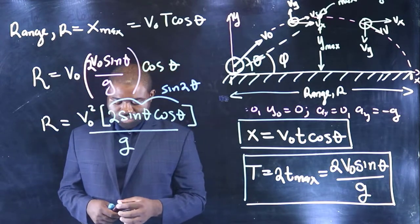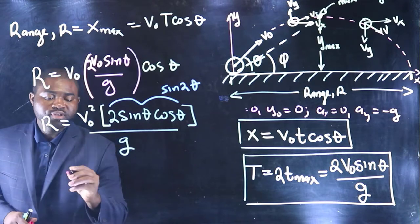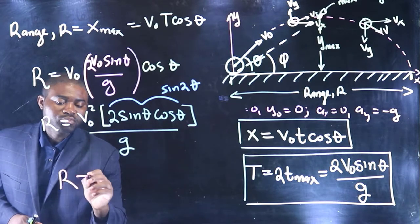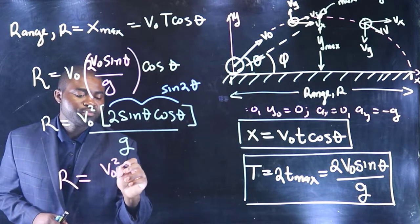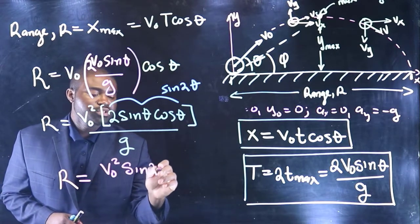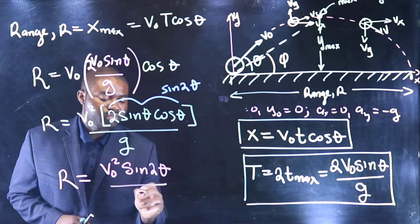Therefore, we can gladly see that the range, R, is V naught squared sine 2 theta, all divided by G.